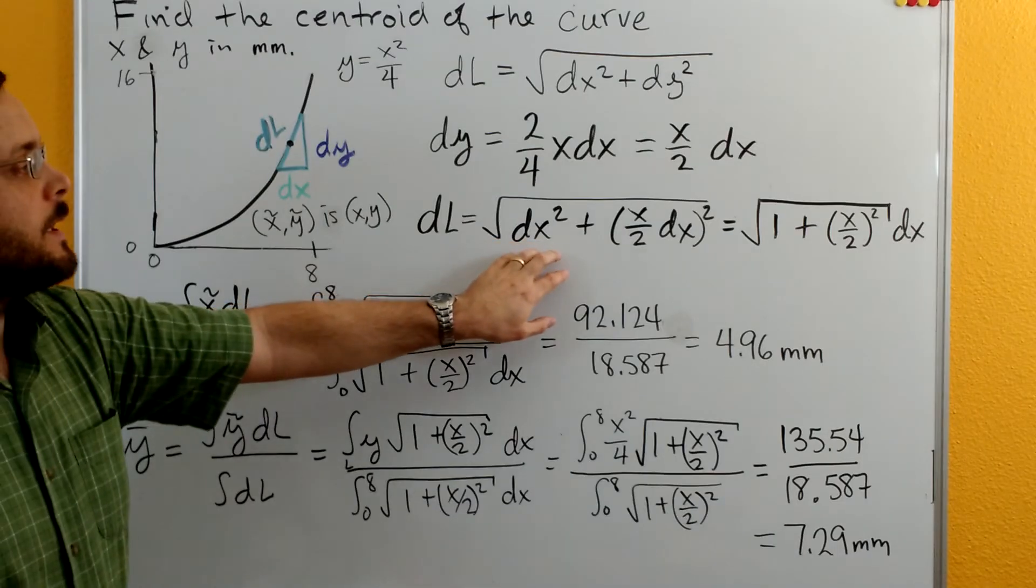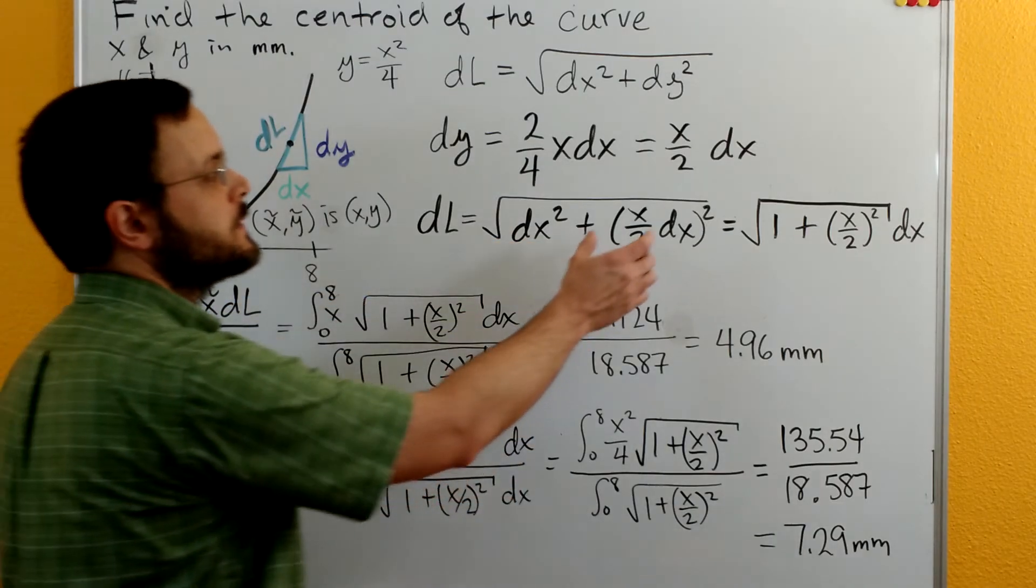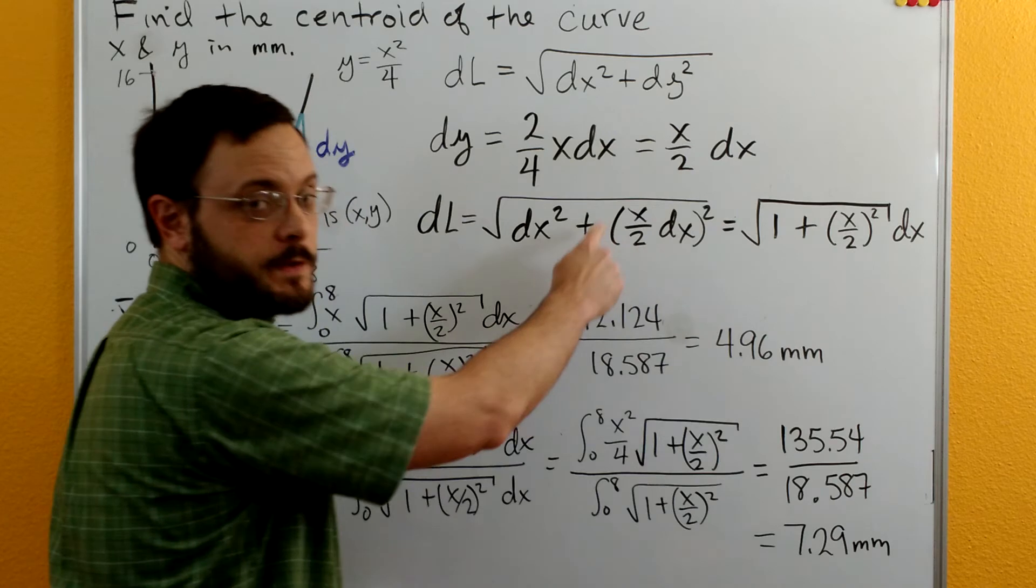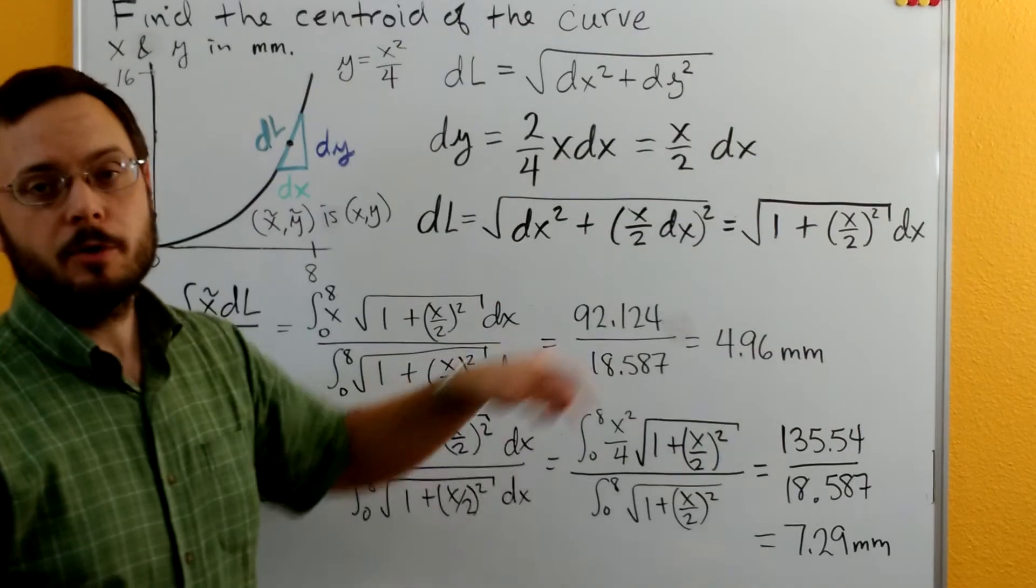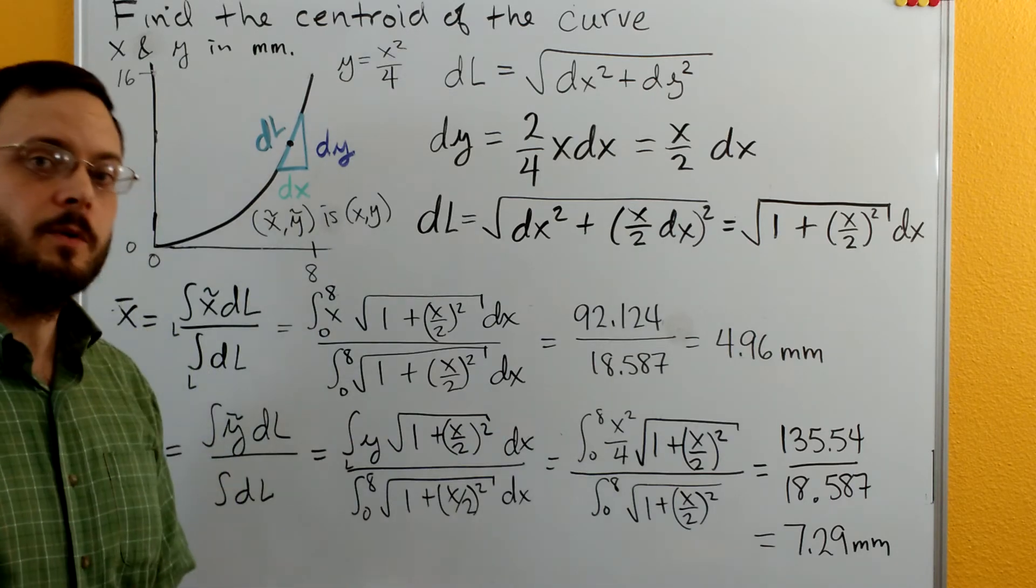Then we can substitute that back in. In place of dy squared we have x over 2 dx squared. We have dx squareds in both of these terms so we can pull the dx squared out.